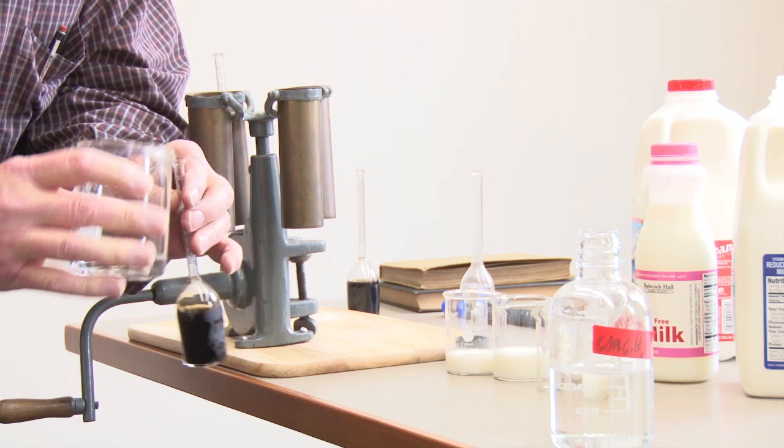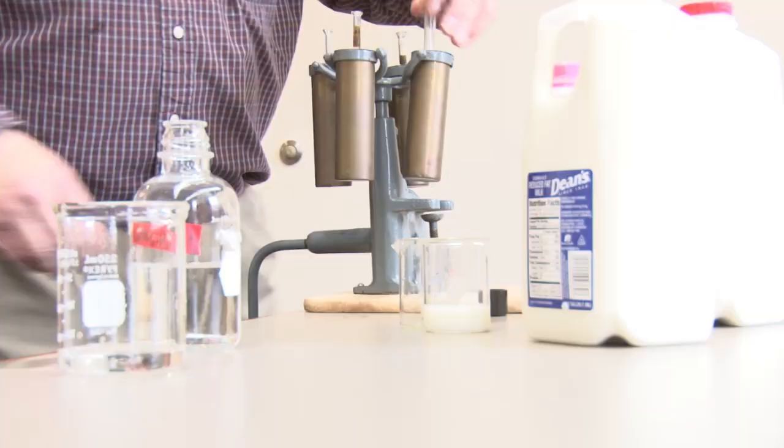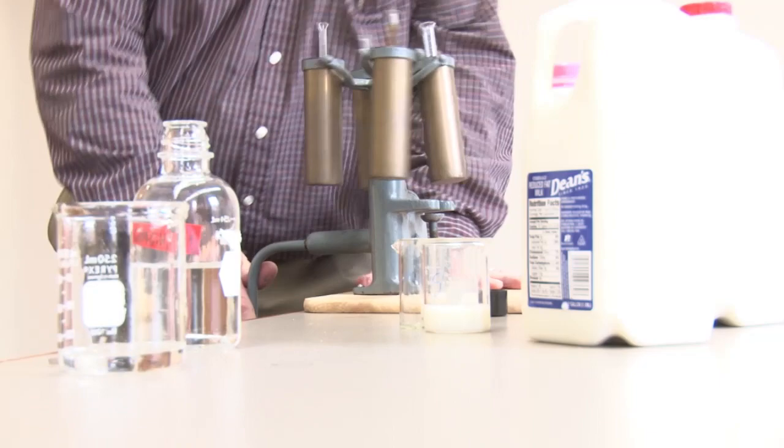What we want to do now is add a little bit of warm water to force the floating lipid up into the neck of the bottle where we can measure its amount. Short spin.